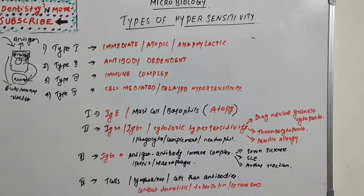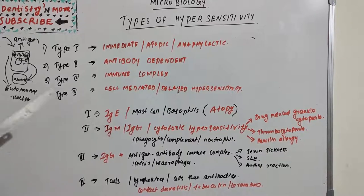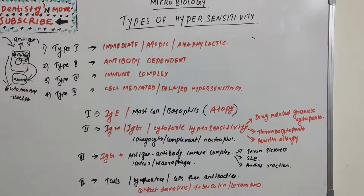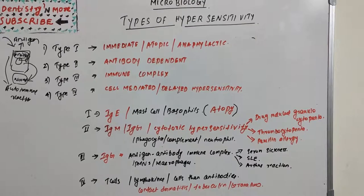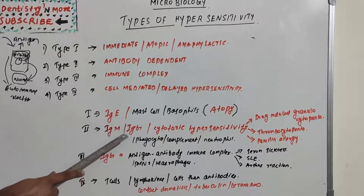Type 2 hypersensitivity is also known as cytotoxic hypersensitivity and may affect a variety of organs and tissues. The antigens are normally endogenous, although exogenous chemicals that attach to cell membranes can also lead to Type 2 hypersensitivity. The most common examples are drug-induced hemolytic anemia, granulocytopenia, thrombocytopenia, and penicillin allergy. The reaction time is minutes to hours.